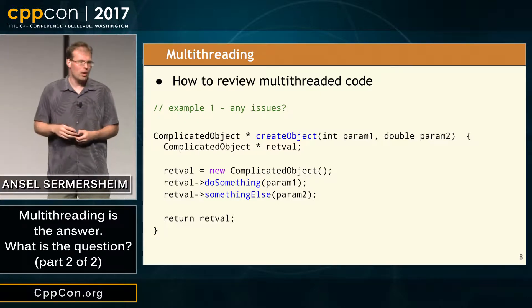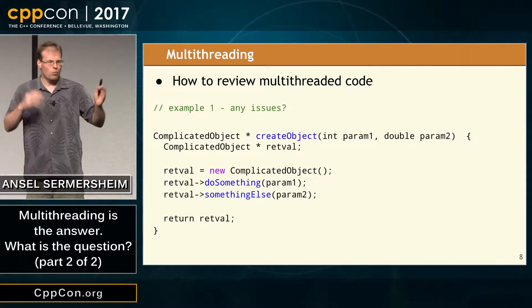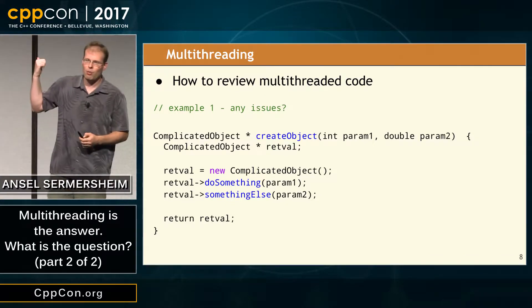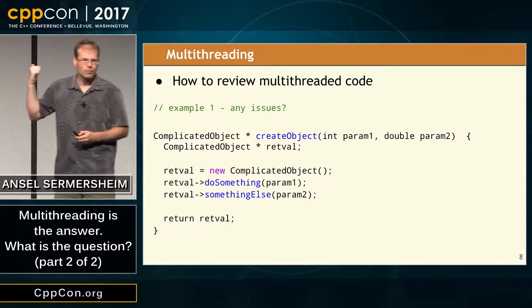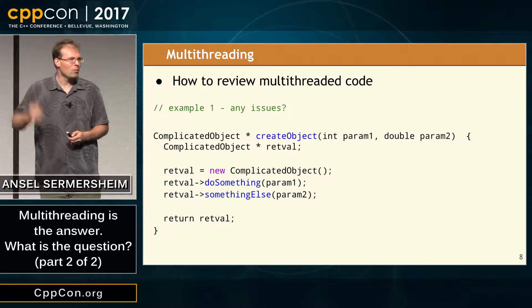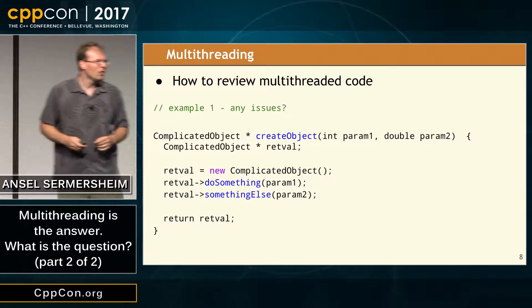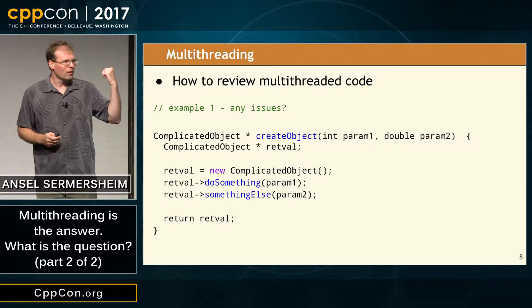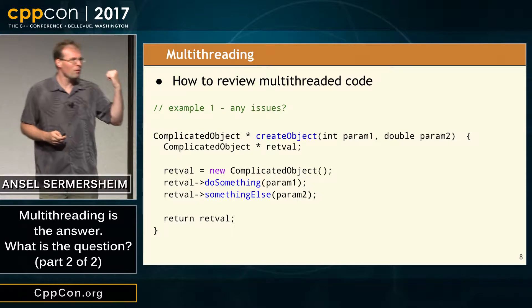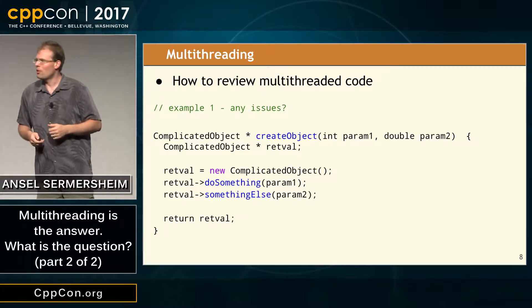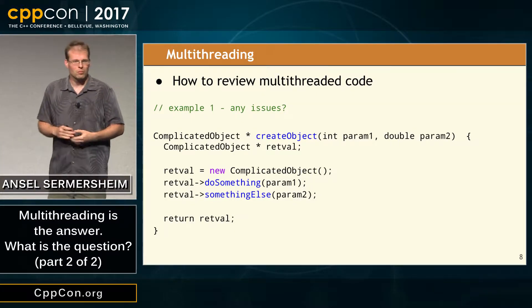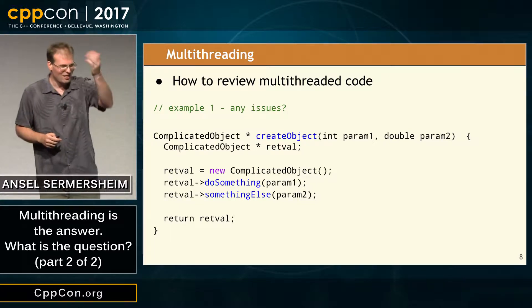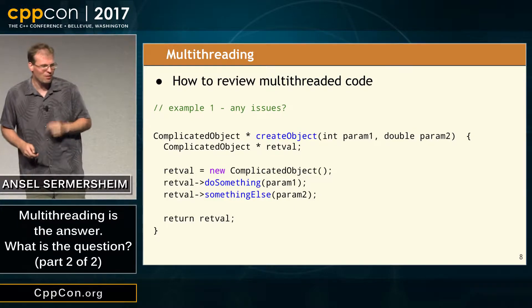We have some method. It's going to create an object, instantiate a new one, do some work, do some other work, and return it. Does this look like good modern C++ code? It's returning a raw pointer — we don't like that in our code review. This is not safe. Exception safety was also raised — I'll give you both credit for that.